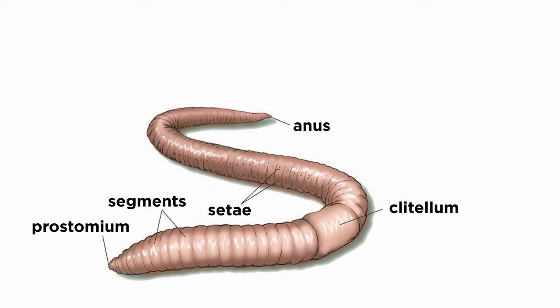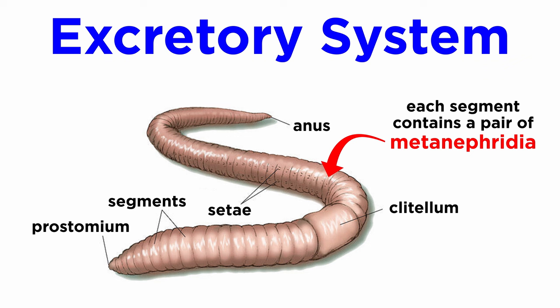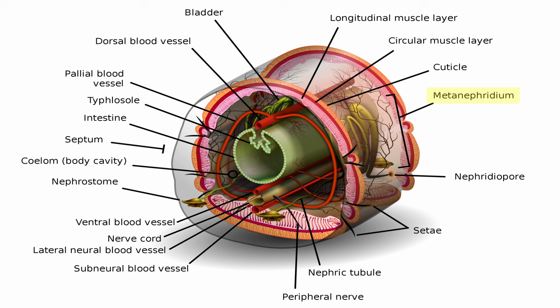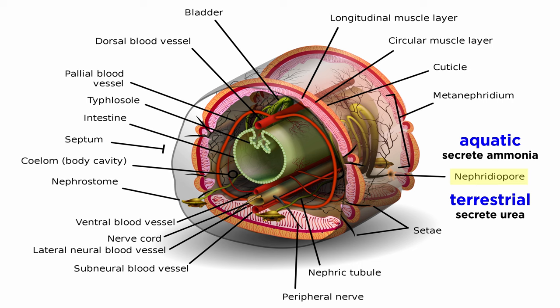The earthworm excretory system consists of a pair of metanephridia on each segment, except the first three anterior segments and the final posterior segment. The nephridium is comprised of a series of complex tubes and a small bladder. Wastes are filtered from the blood and excreted through individual nephridiopores located on every segment that bears metanephridia. Aquatic clitellates secrete ammonia, and most terrestrial species, like earthworms, secrete urea.